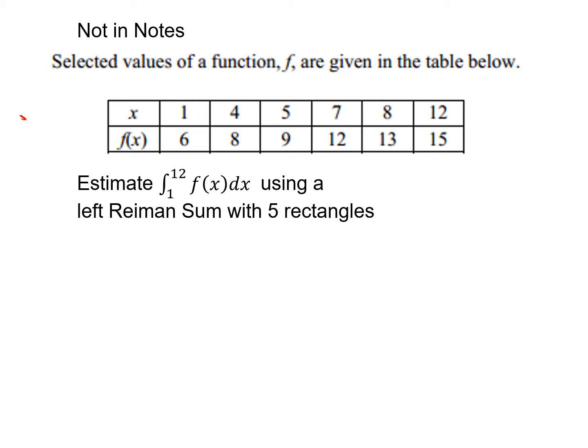Now, remember what we're doing, the Riemann sum is an approximation of an integral. So that is why the problem says estimate from 1 to 12 f of x dx using a left Riemann sum with five rectangles.